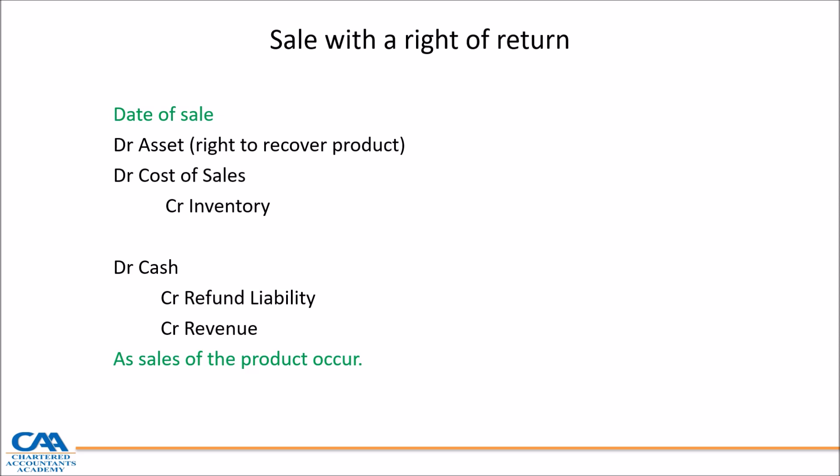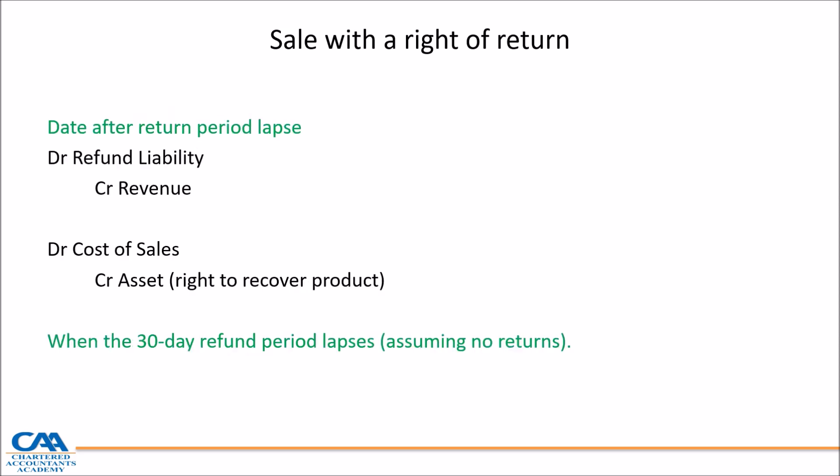In terms of recognising your revenue: you have trade receivables for 100% of the sales, but you can't recognise revenue for 100% since you expect a 20% return. So your revenue is only to the extent of 80%, and the balance is a refund liability — because your customers are expecting you to pay them back if they do return the products. Those are your journals on the date of sale in relation to a sale with the right of return.